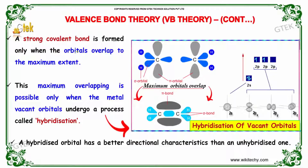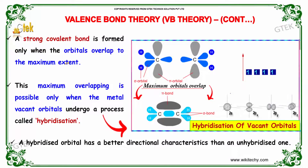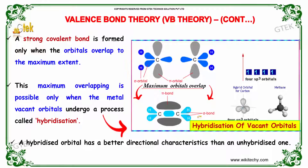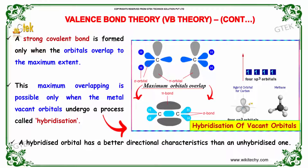A strong covalent bond is formed only when the orbitals overlap to the maximum extent. The normal overlap gives the sigma orbital, and the additional overlap is referred to as a pi bond, along with the sigma bond. The maximum overlapping is possible only when the metal vacant orbitals undergo a process called hybridization. A hybridized orbital has better directional characteristics than an unhybridized one.